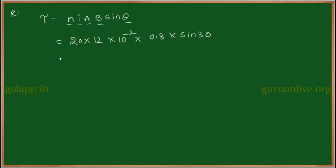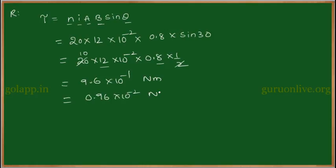That is equal to 20 into 12 into 10 to the power of minus 2 into 0.8 into 1 by 2. That is equal to 12, 8s are 96, equal to 9.6 into 10 to the power of minus 1 newton meter. This is equal to 0.96 into 10 to the power of minus 2 newton meter.